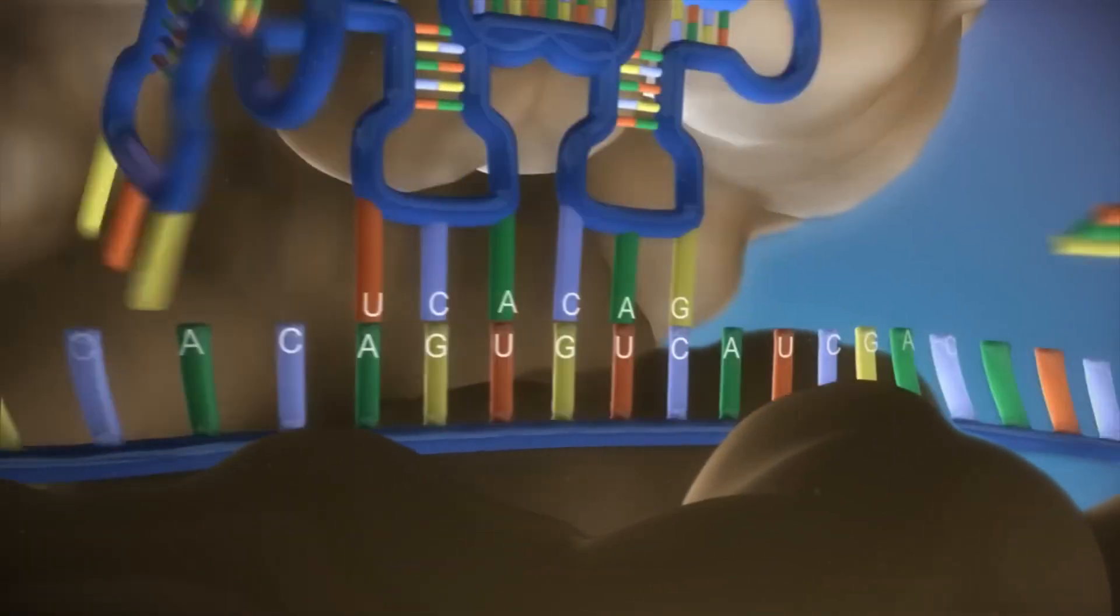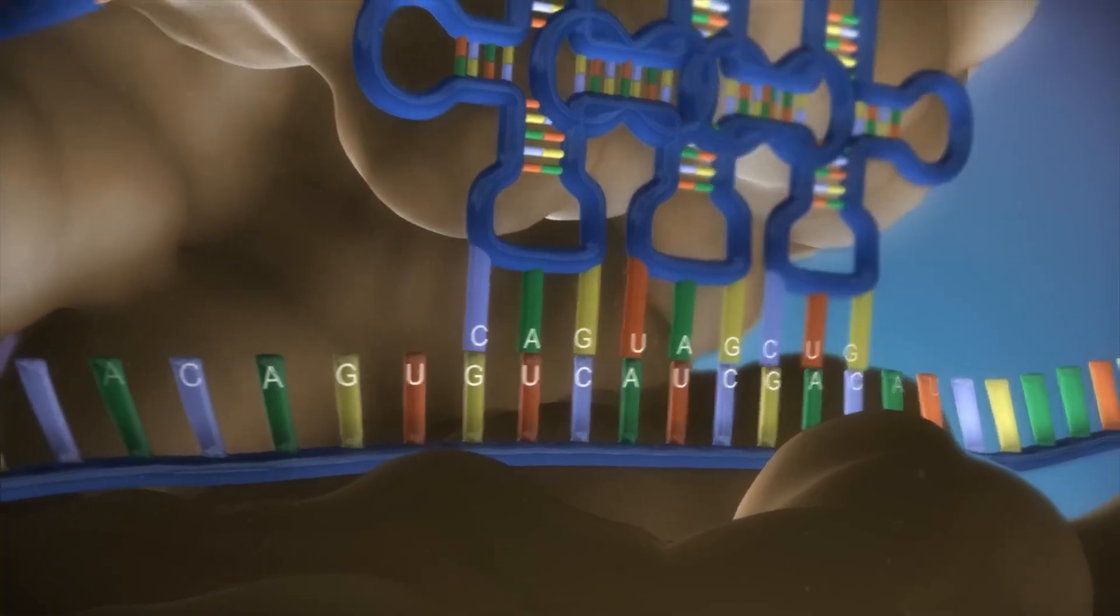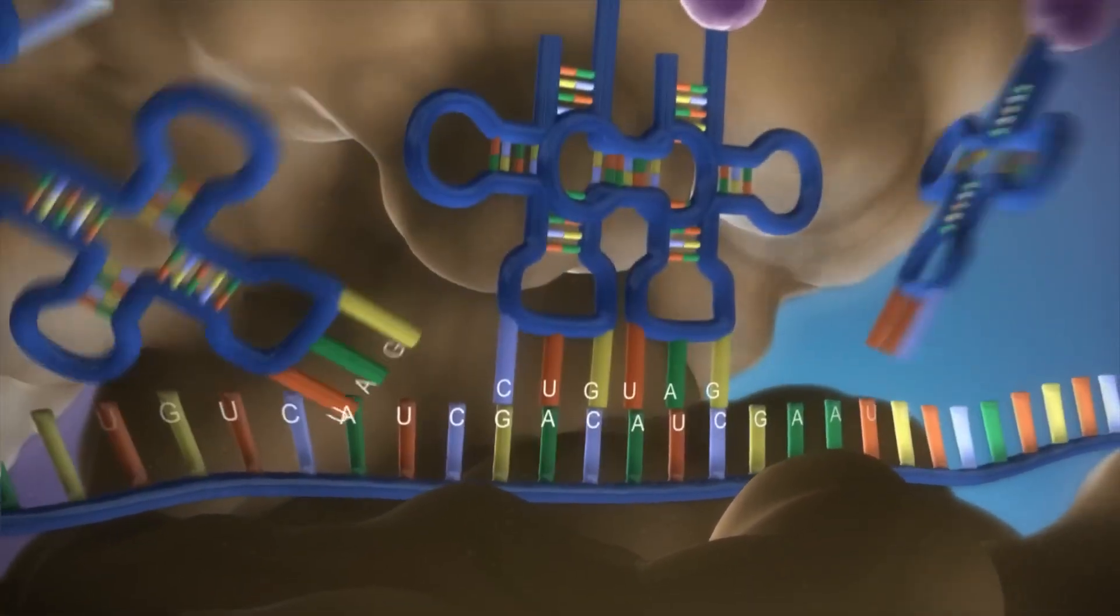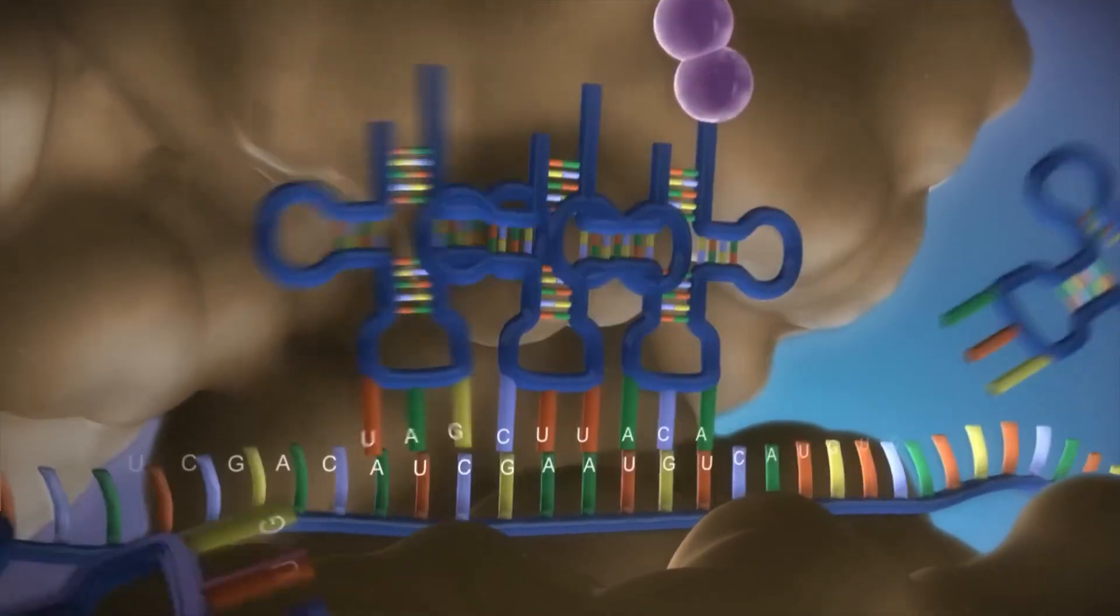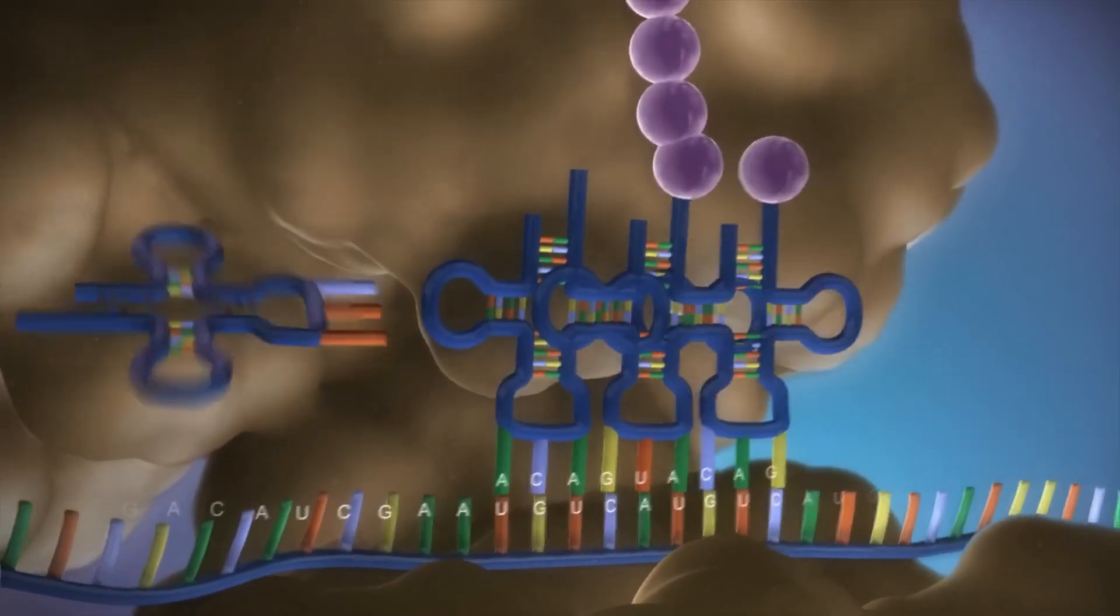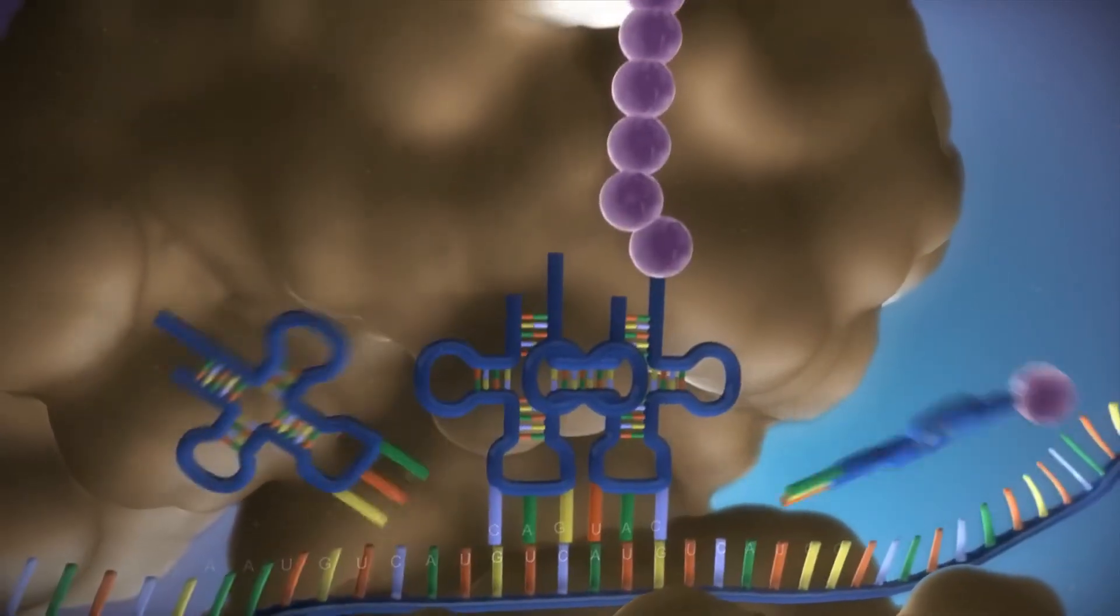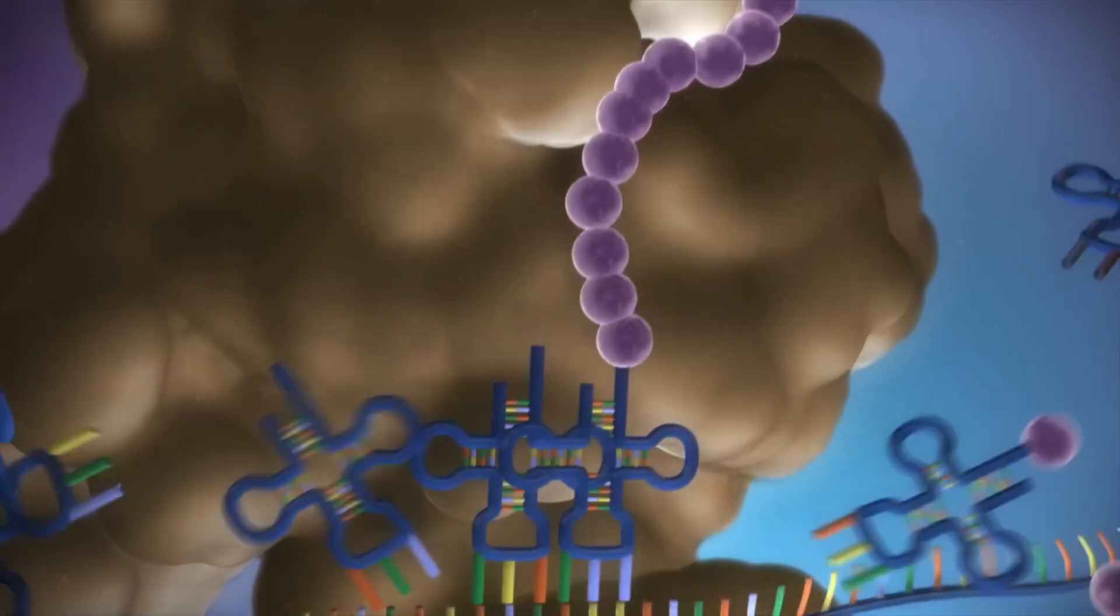The messenger RNA is read three bases at a time. As each triplet is read, a transfer RNA delivers the corresponding amino acid. This is added to a growing chain of amino acids.